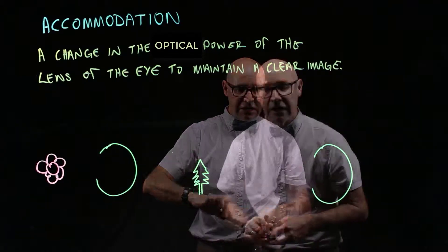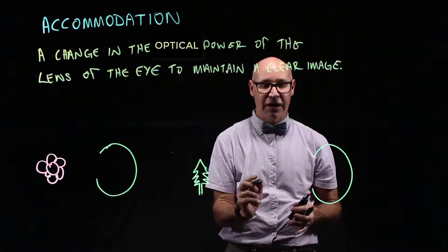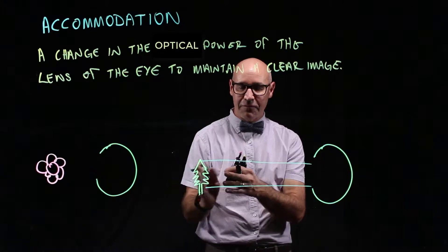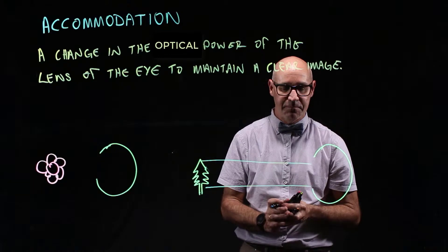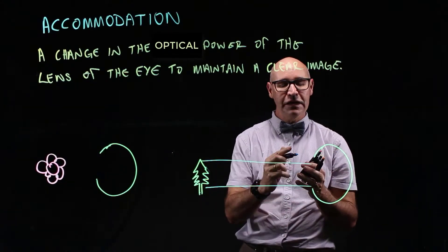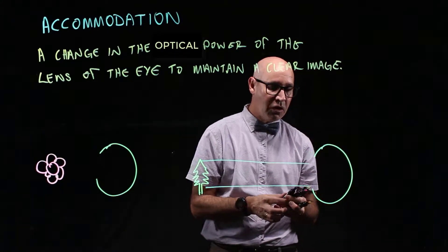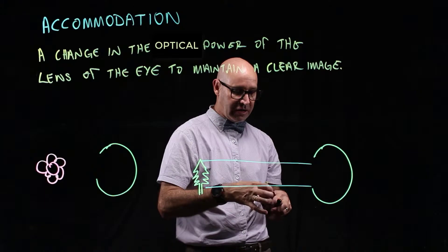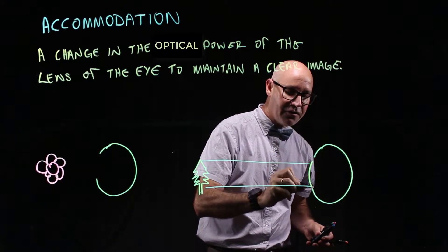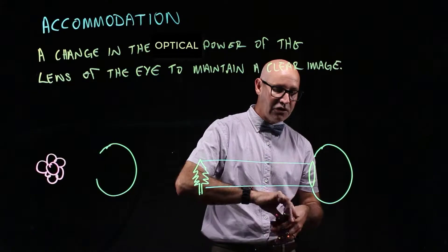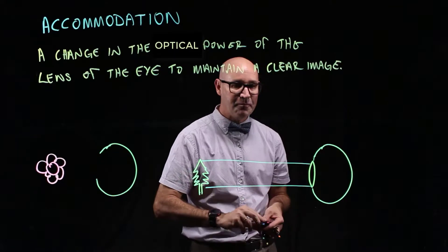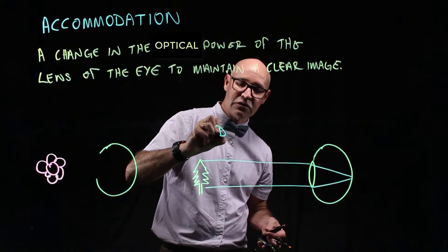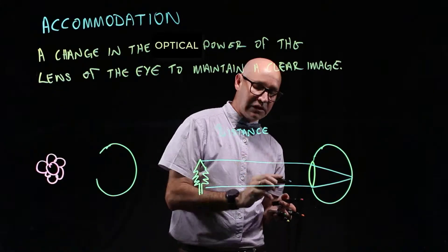Let's do the tree first. When we're looking at something that's far away, the light rays going to the eye are parallel. I'm just going to draw a couple of the incident rays — they go to the eye quite parallel and flat. We need to bend the light so that the focal point lands on the retina, the back of the eye. For that to occur, we have a thin lens. The lens is thin because it doesn't need to bend the light too much. So for distant objects, the lens is thin.